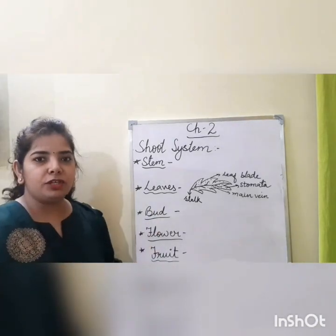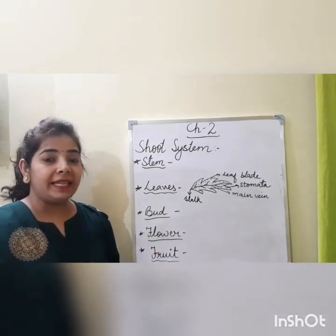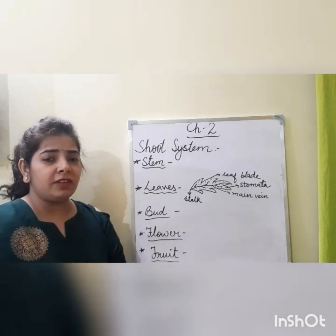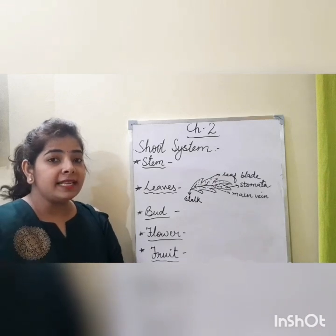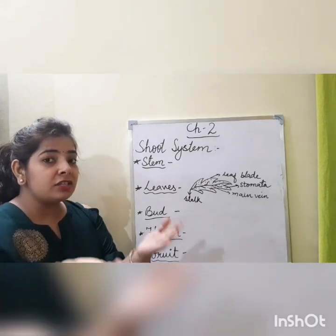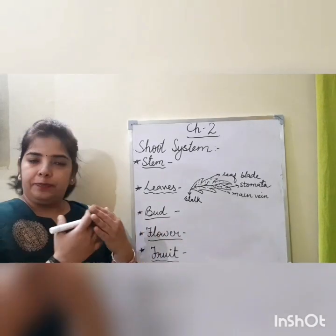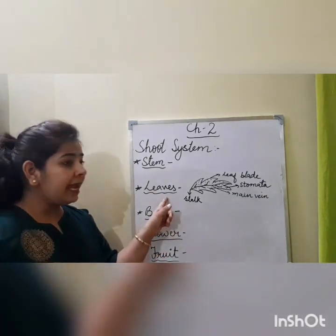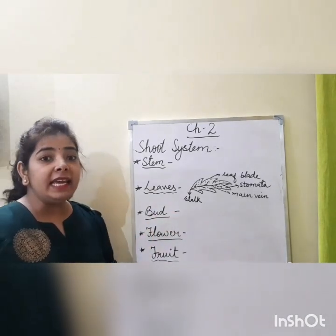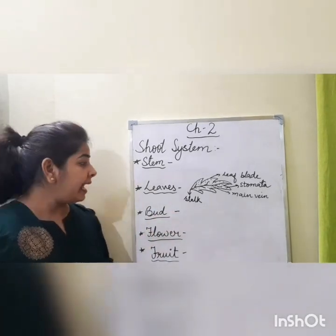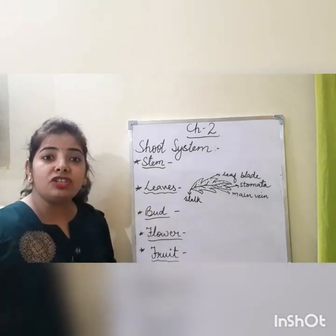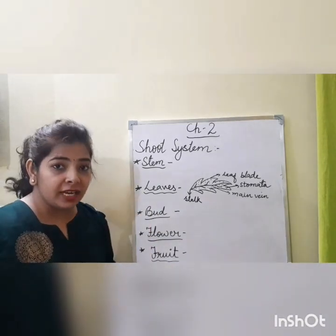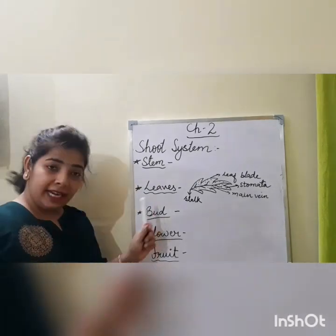Another part in our shoot system is leaves. Leaves are the most important part of the plant because, just as humans cannot live without food, plants also cannot live without food — and food is prepared by leaves. Leaves are known as the kitchen of the plant.